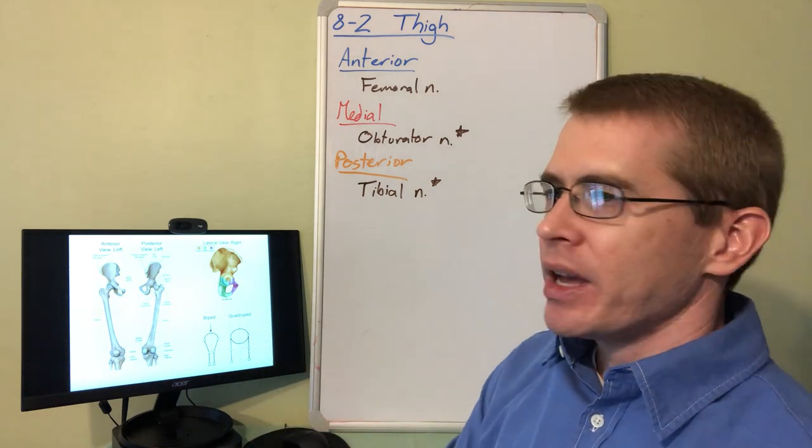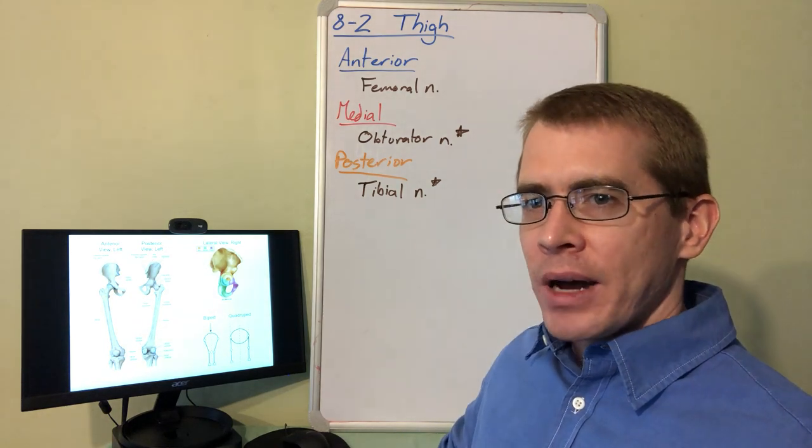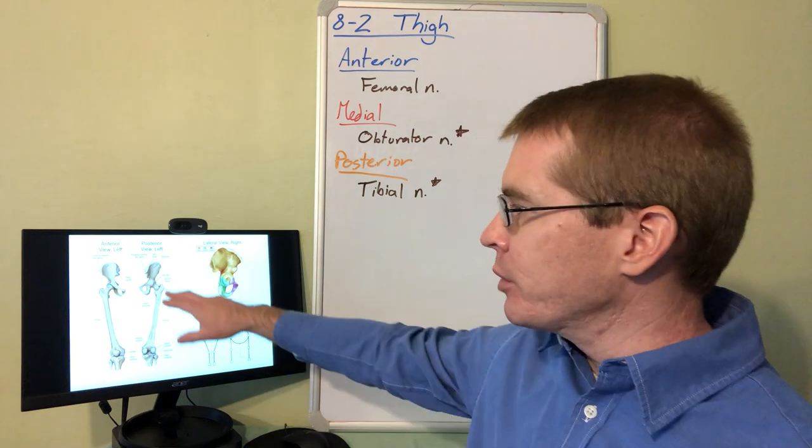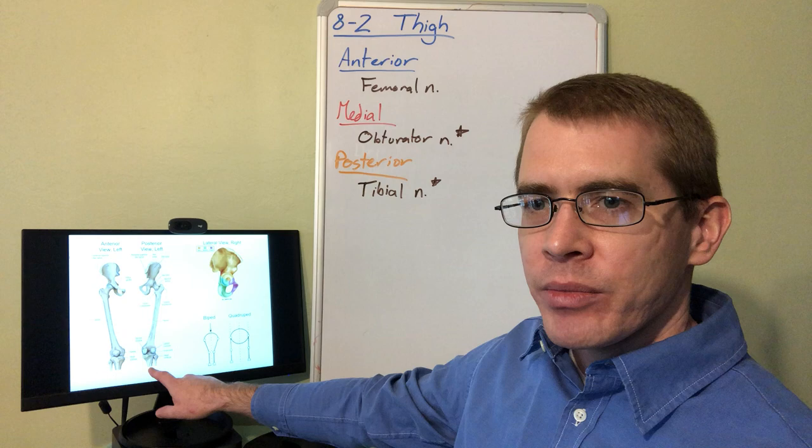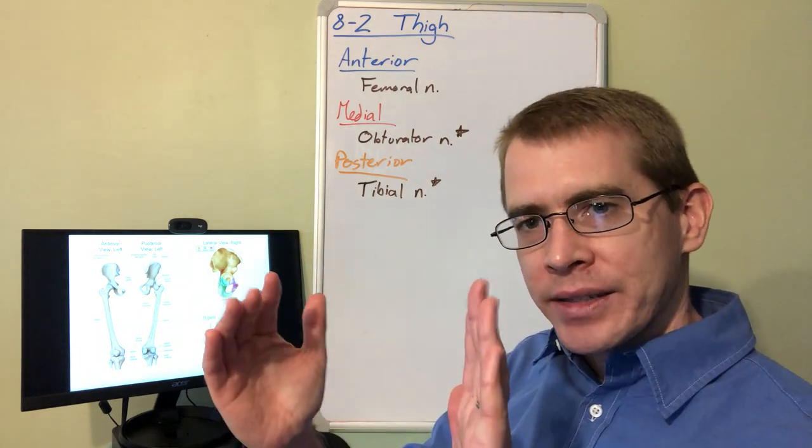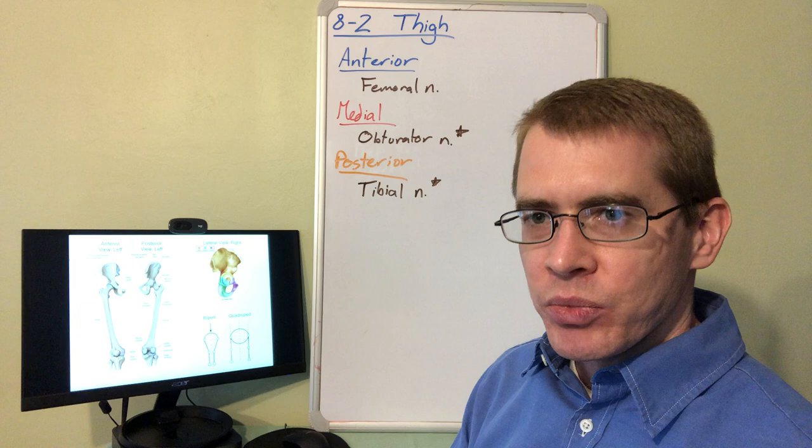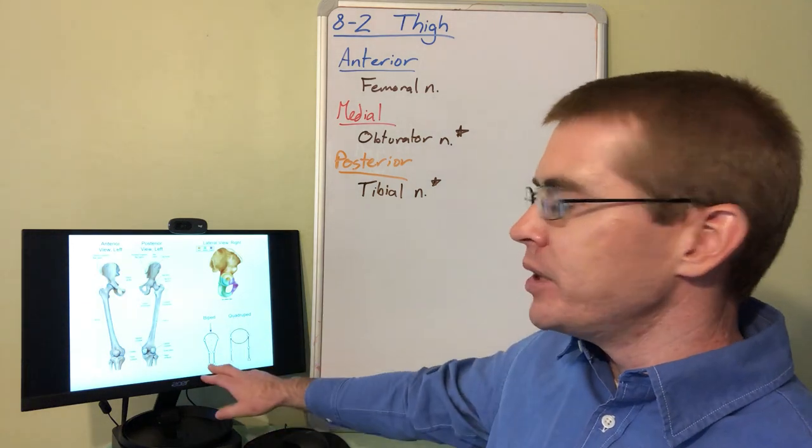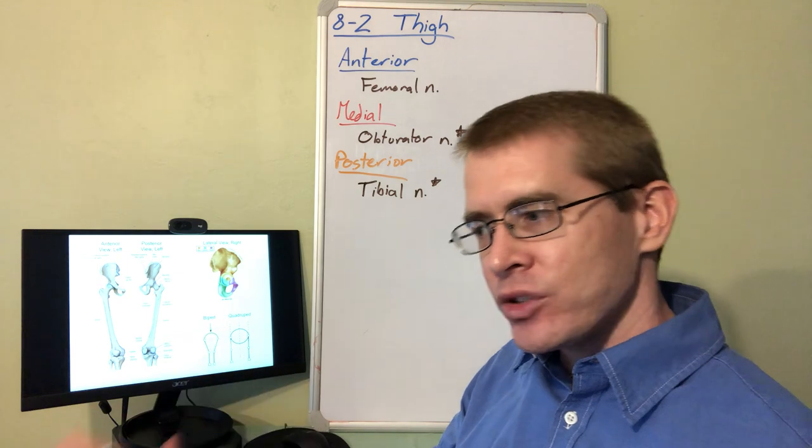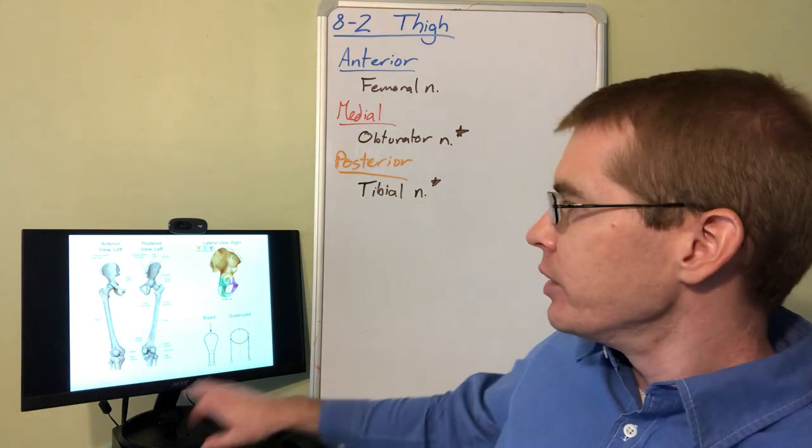An interesting aspect about the thigh in humans is our bipedal nature. Our bipedal nature requires that our femur is angled inward. When we're standing upright with our legs extended, our femur is angled inward so that our feet can be stabilized at our center of gravity. Quadrupeds have their feet widely separated from their center of gravity, so they can't stand on one or two legs because they're much less stable.